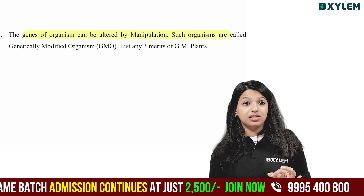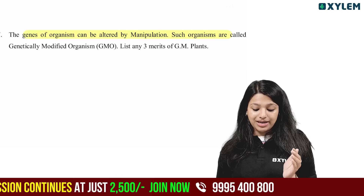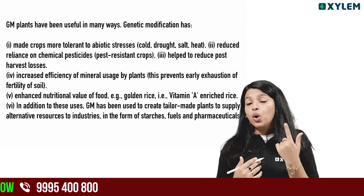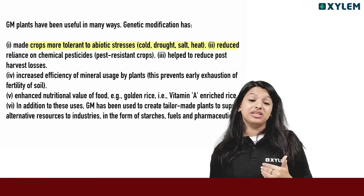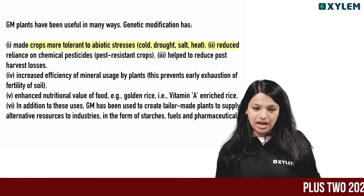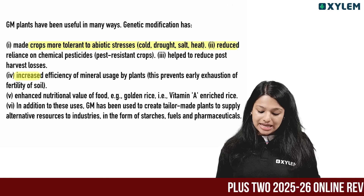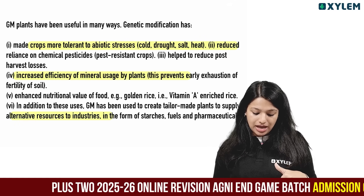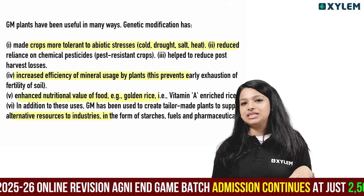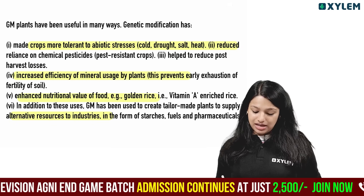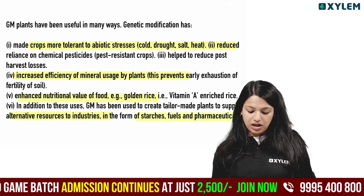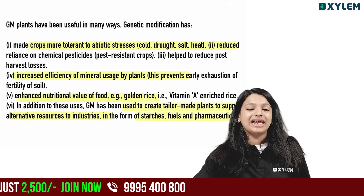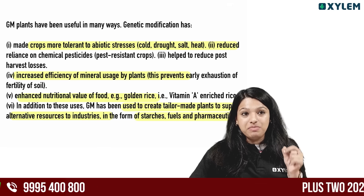The gene of an organism can be altered by manipulation — such organisms are called genetically modified organisms. List any three merits of GM plants. One: abiotic stress resistance in crops. Two: increased efficiency of mineral usage and nutrient value of food, such as Vitamin A enriched rice. Three: GM crops can be used as an alternative resource to industry for starch, fuel, and raw materials — using tailor-made plants.